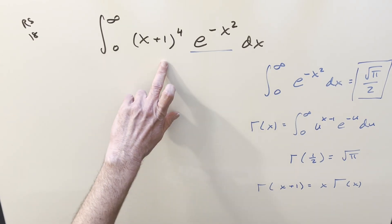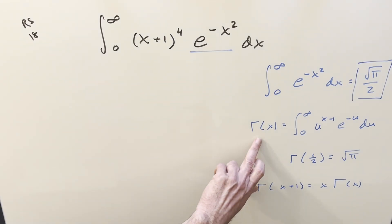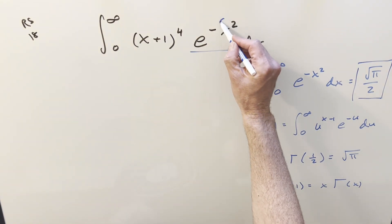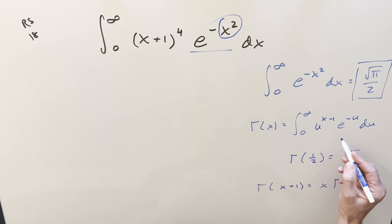And then also, I think with a substitution, we can get it in the form here of the gamma function, where what's going to have to happen is we don't want the x squared, but we can substitute and get e^(-u) here. And then we have it in the form of the gamma function, where we can use the well-known value gamma(1/2) = square root of pi, and we can also reduce values of the gamma function using this property that's a lot like the factorial.